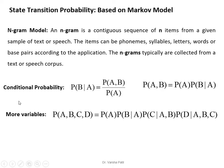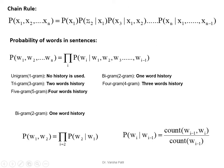N-grams are typically collected from a text or speech corpus. The basic formula for the n-gram model uses conditional probability: probability of B given A equals probability of A and B divided by probability of A. Rearranging, probability of A and B equals probability of A times probability of B given A. Adding more variables, we get the joint probability distribution via the chain rule: P(A) · P(B|A) · P(C|A,B) · P(D|A,B,C), extended up to N variables.